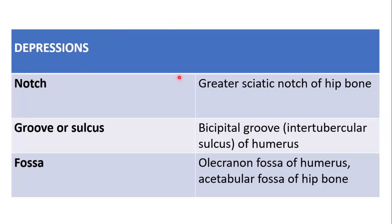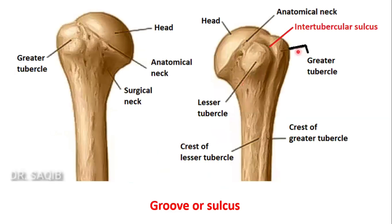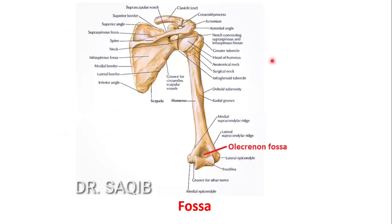The depressions: the notch — the greater sciatic notch of the hip bone. Here you could see the greater sciatic notch of the hip bone, clearly labeled. The groove or sulcus — the bicipital groove, also called the intertubercular sulcus of the humerus. Here you could see the greater tubercle and the lesser tubercle; between these is the intertubercular sulcus or bicipital groove of the humerus. And the fossa — the olecranon fossa of the humerus and the acetabular fossa of the hip bone.